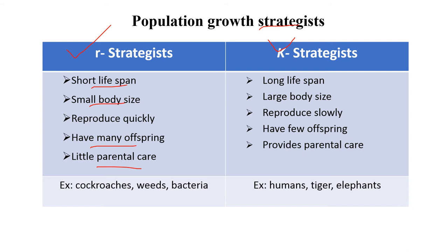K-selected species follow the S-shaped logistic growth curve. They have a long lifespan — 50 to 60 years — and a large body size, like elephants and humans. They reproduce very slowly; for example, elephants reproduce once in 12 years. They have very few offspring — no more than 4 or 5 — but provide huge parental care. Examples of K-strategy species include humans, tigers, and elephants.